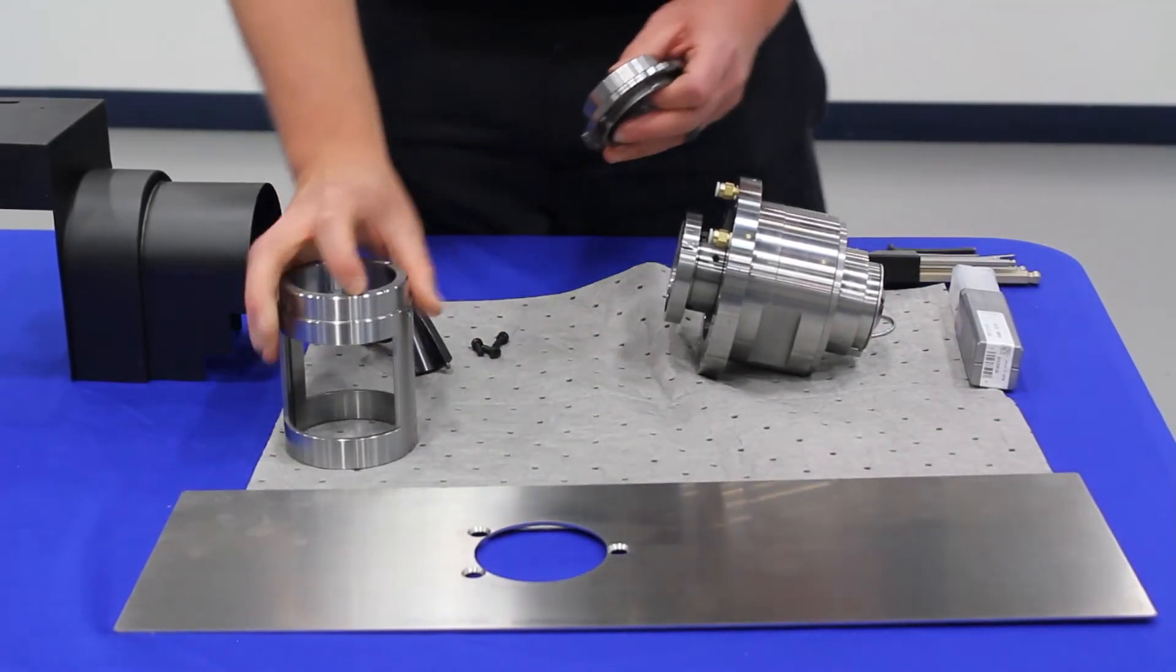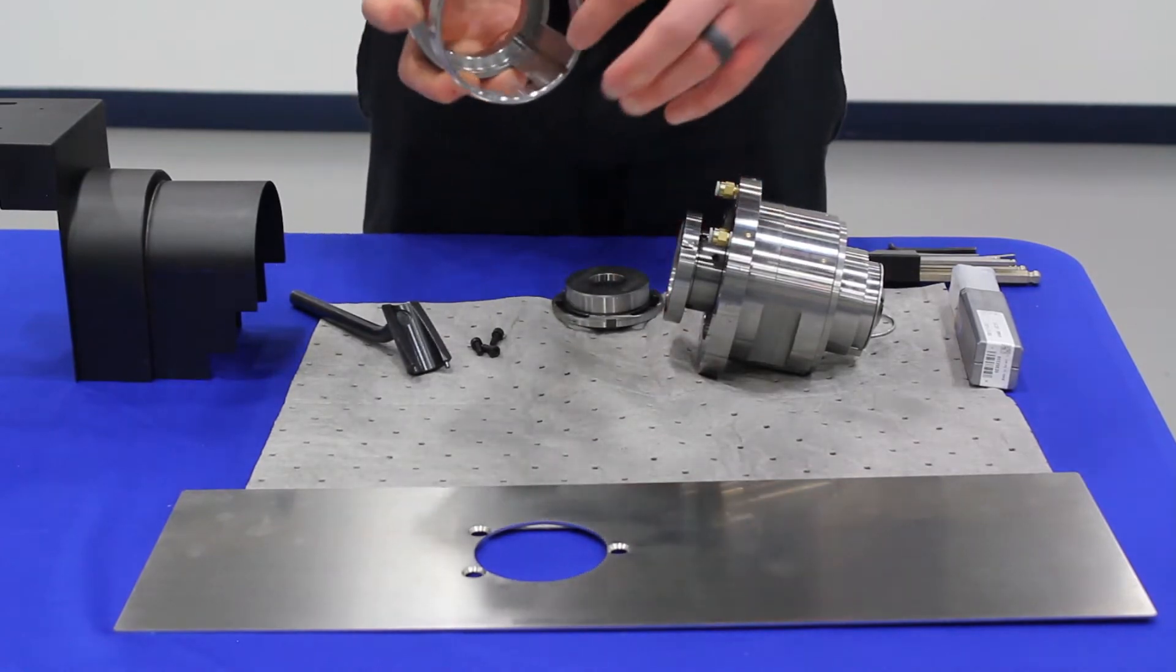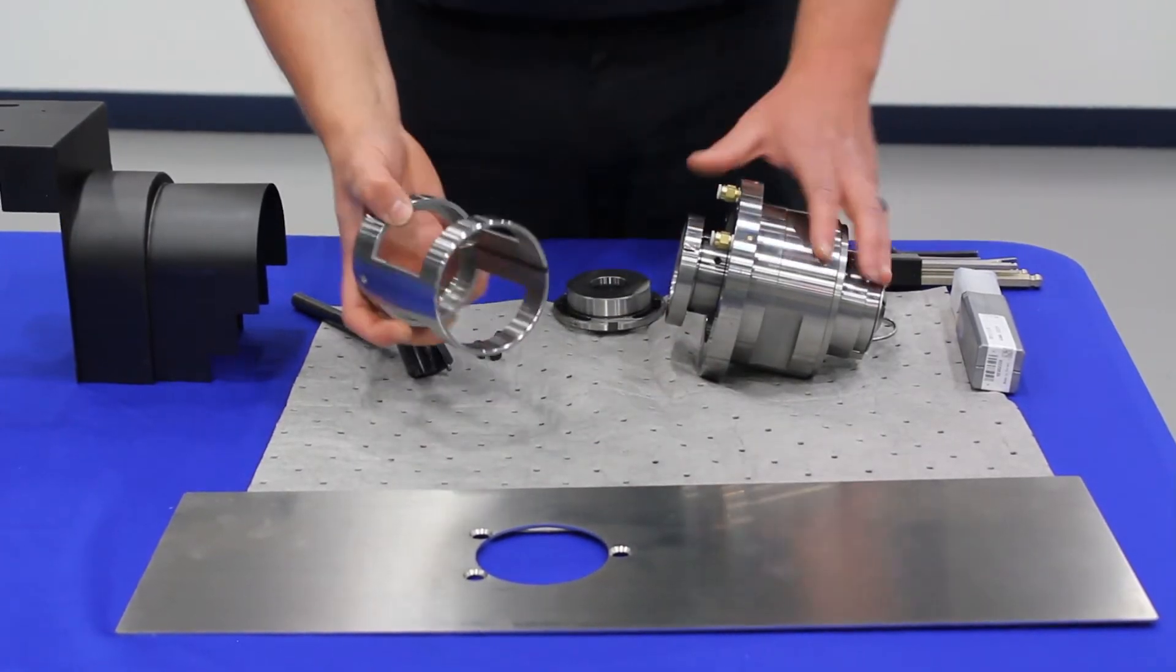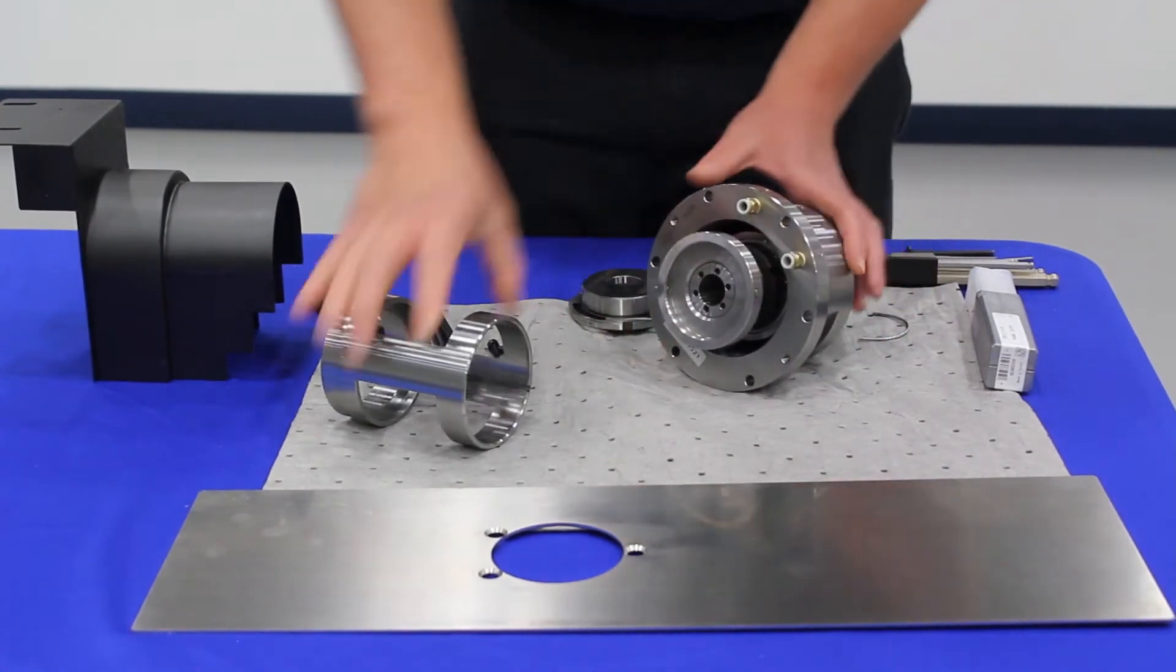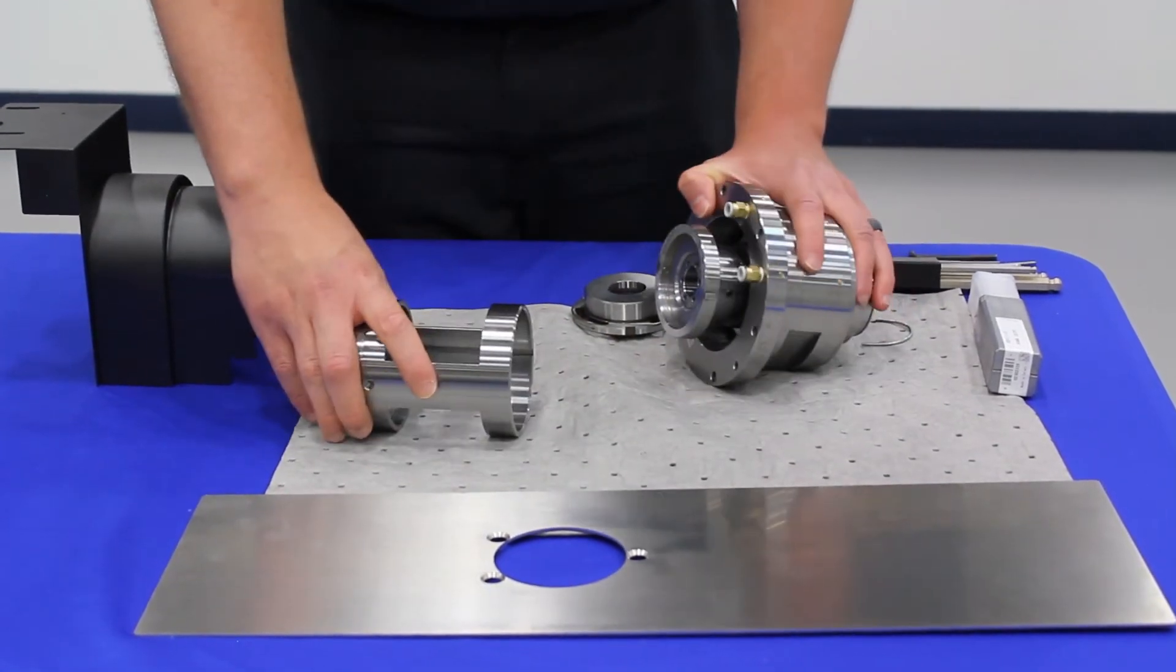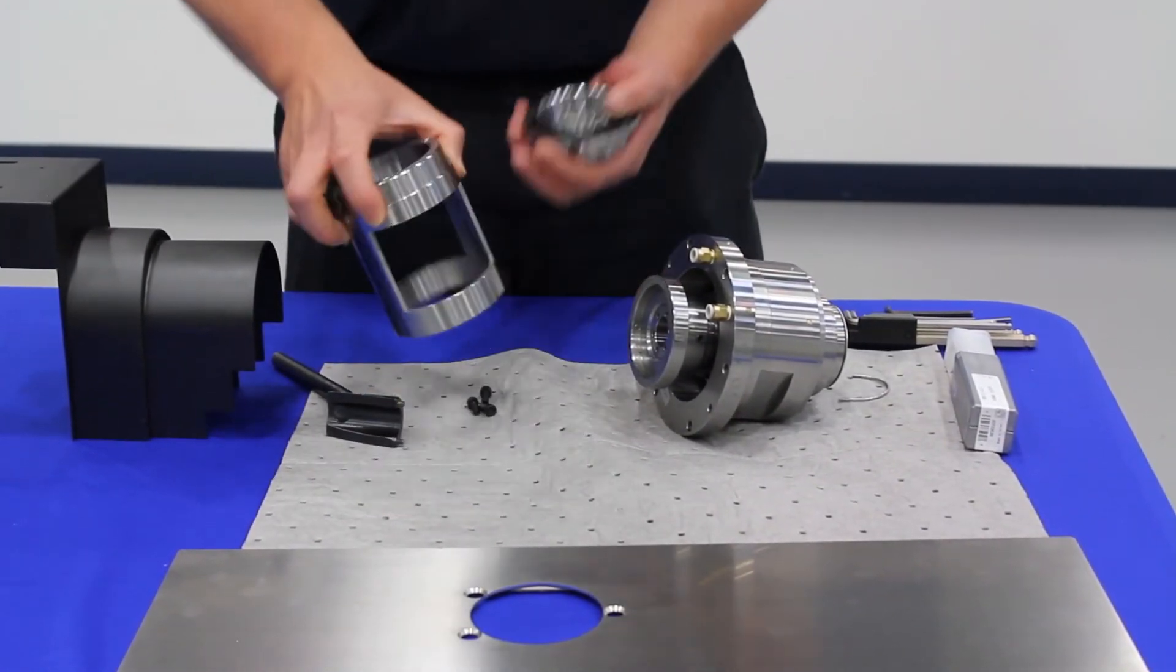We are now going to take this. You will see that on this unit there are two tabs right along the inside of the unit. On the external portion you will have two tabs here as well that line up. We are going to keep that in mind as we put this unit together.